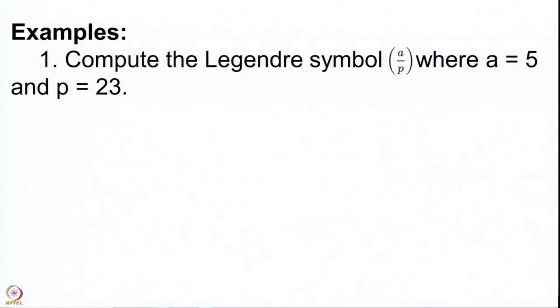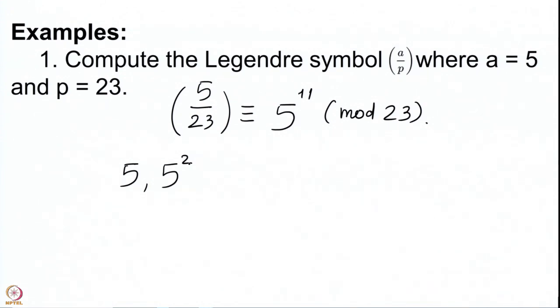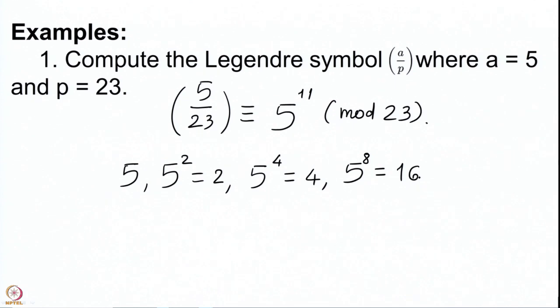Let us see some examples. We want to compute the Legendre symbol (5/23). We know this equals 5^11 modulo 23. To do this computation we compute the successive powers of 5: we have 5, then 5^2 = 25, which is congruent to 2 modulo 23. Then 5^4 is the square of 2, which is 4. Further, 5^8 is 4 squared, which is 16.